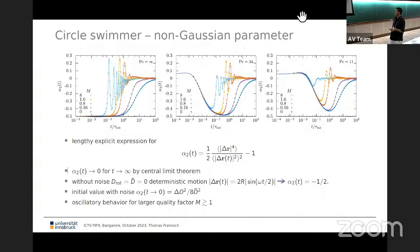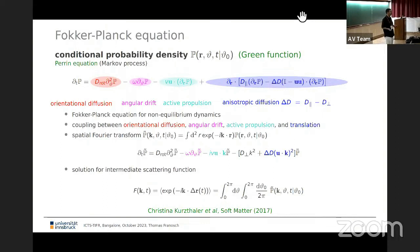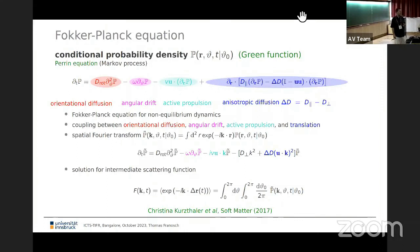What we really want is spatiotemporal information. The MSD and non-Gaussian parameter provide only temporal information. We want to look at a certain length scale — we are interested in the propagator: the conditional probability density to displace by increment r, finding final orientation theta after lag time t, given initial orientation theta_0.